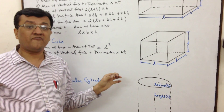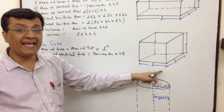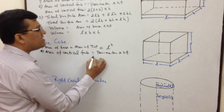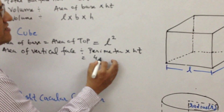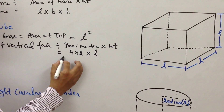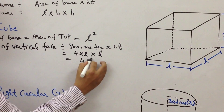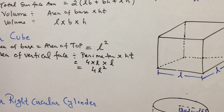Next is the area of vertical faces. The general formula remains the same: perimeter into height.